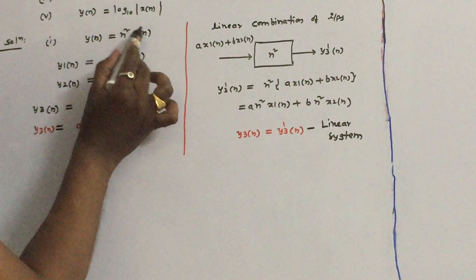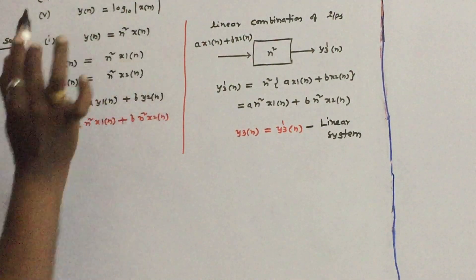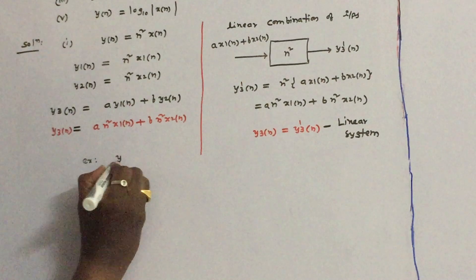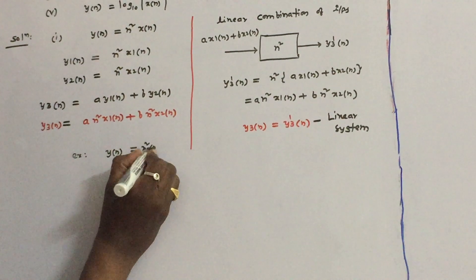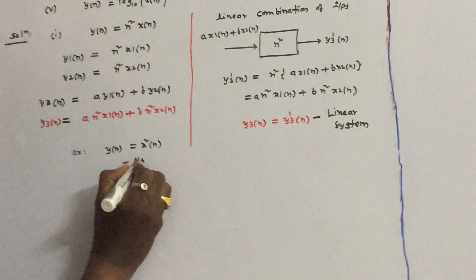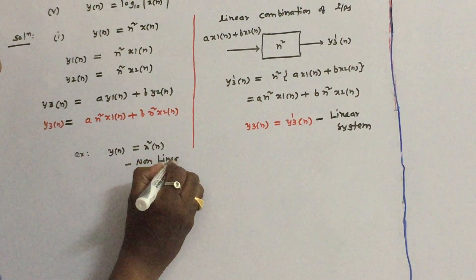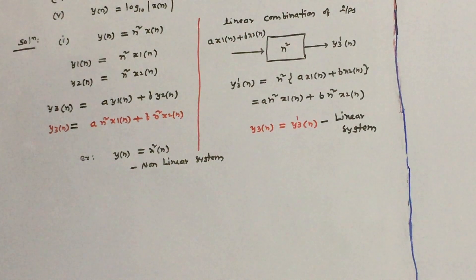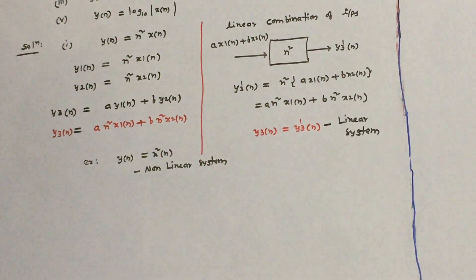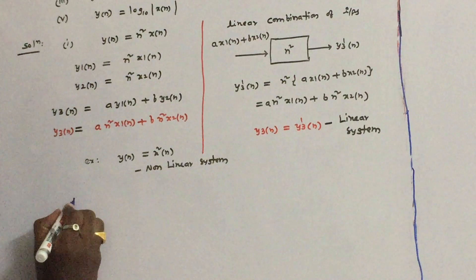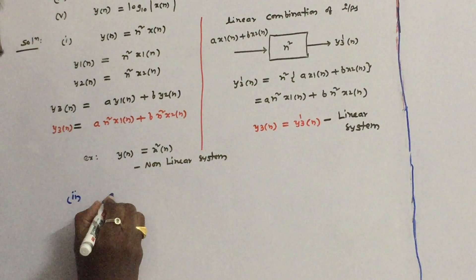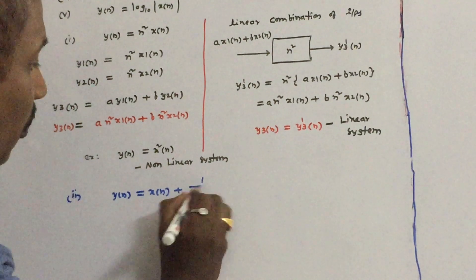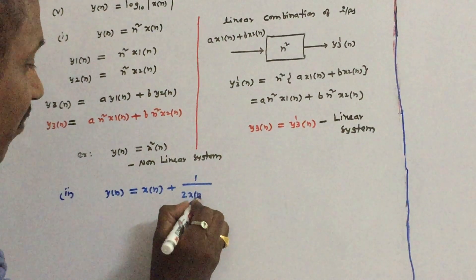Note: if y(n) were given as x²(n), that would be a non-linear system — remember that. Now let us see the second question. y(n) is equal to x(n) plus ½ into x(n-2).